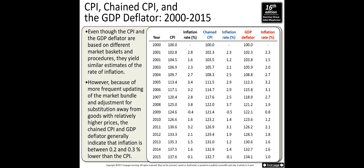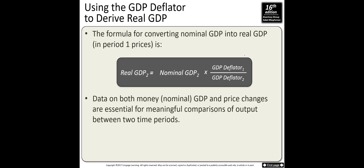Looking at an example with CPI, chain CPI, and GDP deflator between 2000 and 2015: the inflation rate in 2001 increases by 2.8 percent, because CPI increases from 100 to 102.8. The calculation is 102.8 minus 100, divided by 100, times 100, giving 2.8 percent. When you use chain CPI you get a lower inflation rate of 2.3 percent, and the GDP deflator similarly gives 2.3 percent inflation in 2001.